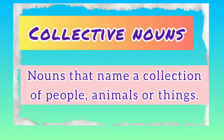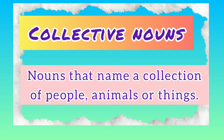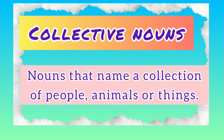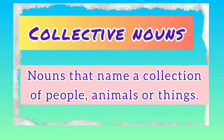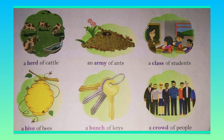Next, we are going to learn about collective nouns. What is a collective noun? Nouns that name a collection of people, animals or things are called collective nouns. Here are some examples: a herd of cattle, an army of ants, a class of students, a hive of bees, a bunch of geese, a crowd of people. These are the collective nouns used for people, things or animals.